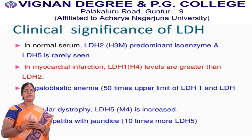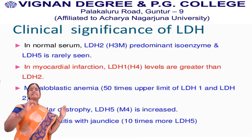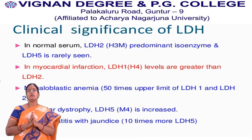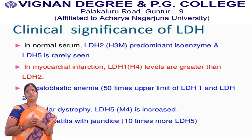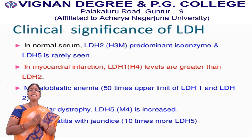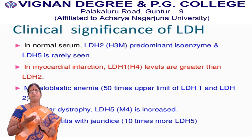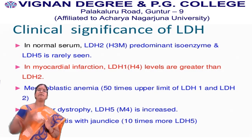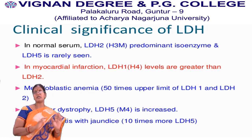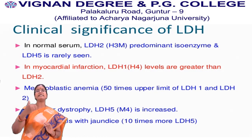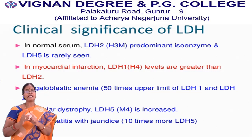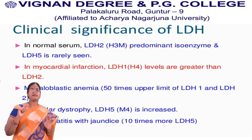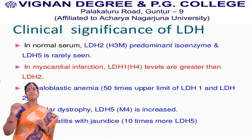Coming to the clinical significance of LDH: in normal serum, that is in a healthy person, LDH2 is the predominant isoenzyme and LDH5 is rarely seen. In case of myocardial infarction, LDH1 levels will be increased. Generally LDH2 levels should be present in significant amounts, but in myocardial infarction conditions, LDH1 levels will predominate. An increase in LDH1 levels indicates the person is suffering with myocardial infarction.